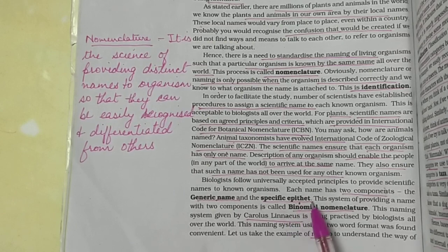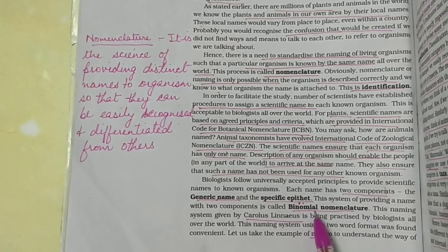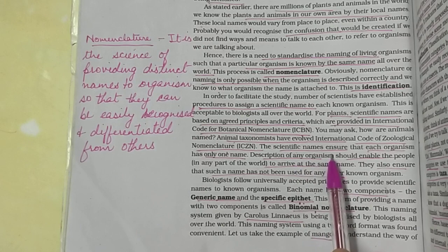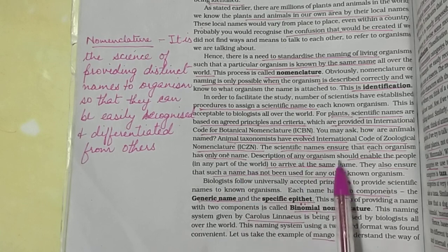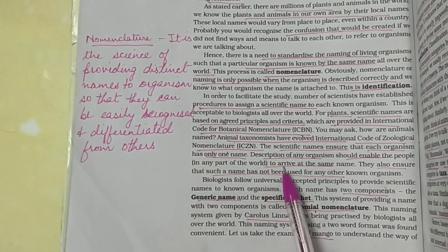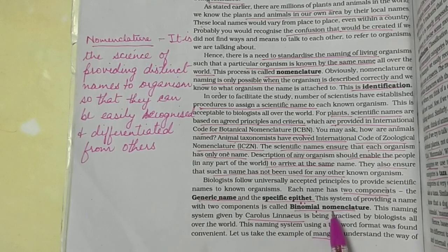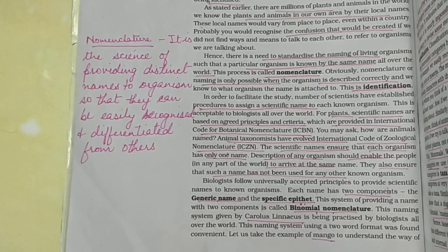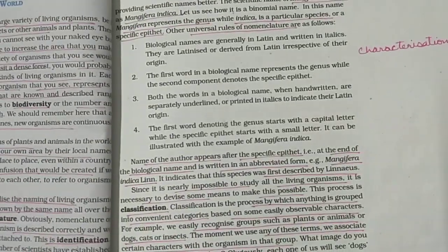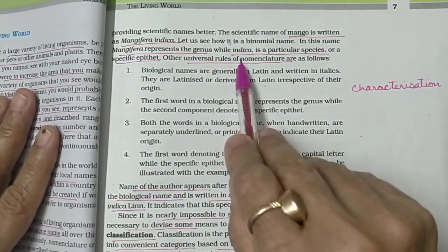This type of nomenclature, where each name has two components, is known as binomial nomenclature. It ensures that each organism has only one name, and a description of any organism enables people to arrive at the same name. This binomial nomenclature was given by Carolus Linnaeus. For example, mango is named Mangifera indica — here 'Mangifera' represents the genus and 'indica' represents the species.